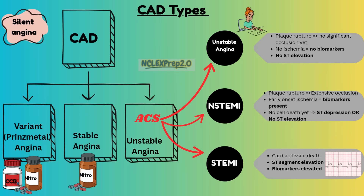Prinzmetal or variant angina — it's a less common type as well. It's caused by coronary artery vasospasms, and it's very unpredictable when it's going to happen. The pain will respond to calcium channel blockers, which stop the vasospasms, and nitroglycerin, which vasodilates the artery and allows perfusion.